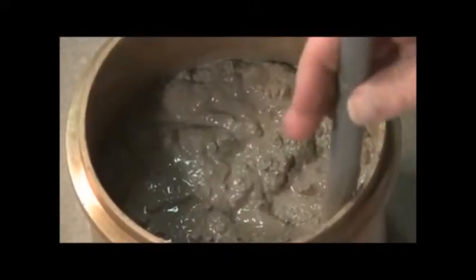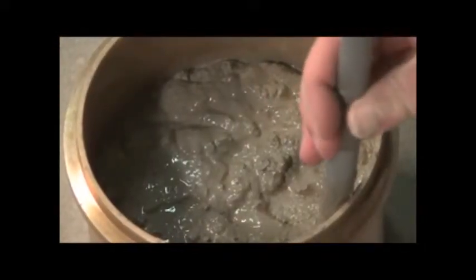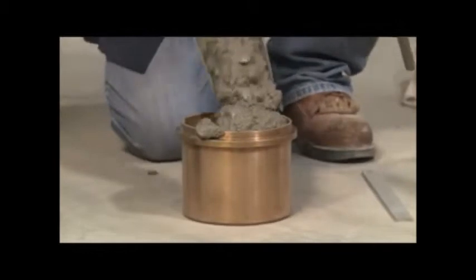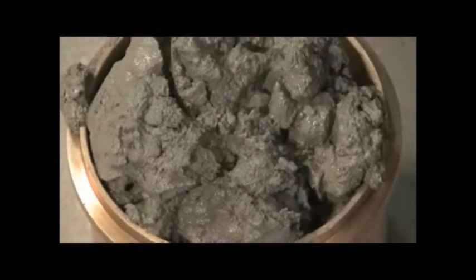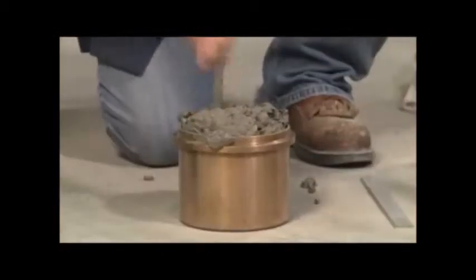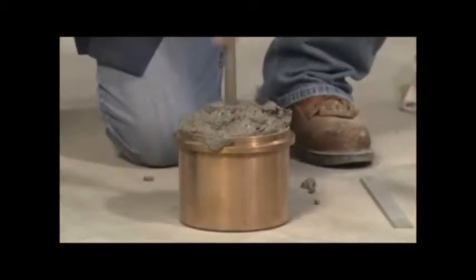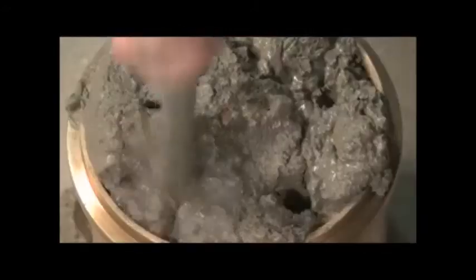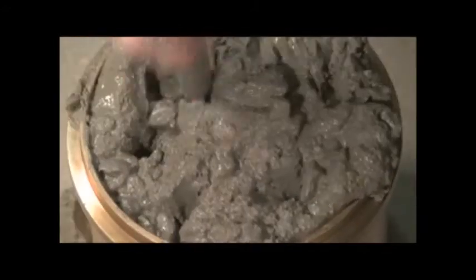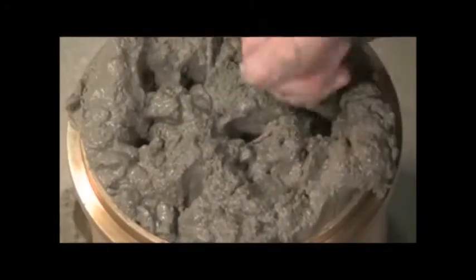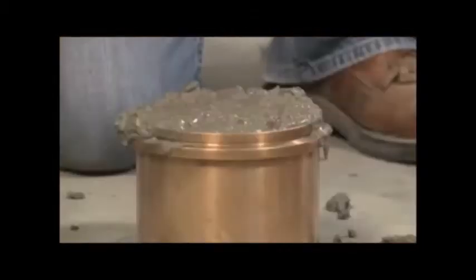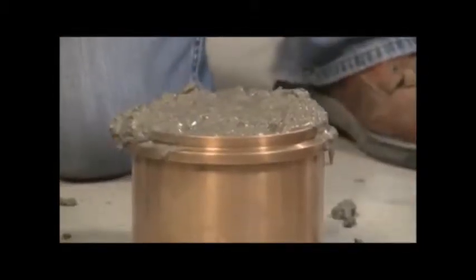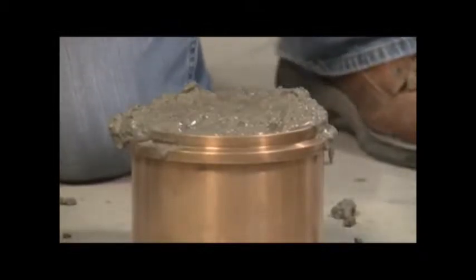Place the last layer with a volume of material that will leave the bowl overfilled by about an eighth of an inch after consolidation. Rod 25 strokes uniformly distributed over the cross section, penetrating the underlying layer by about one inch with each stroke, and repeat the tapping procedure with the mallet. You may need to add or remove some material to achieve the required 1/8 inch overfill. Strike off the surface level with the top of the bowl and wipe the flange of the bowl clean.